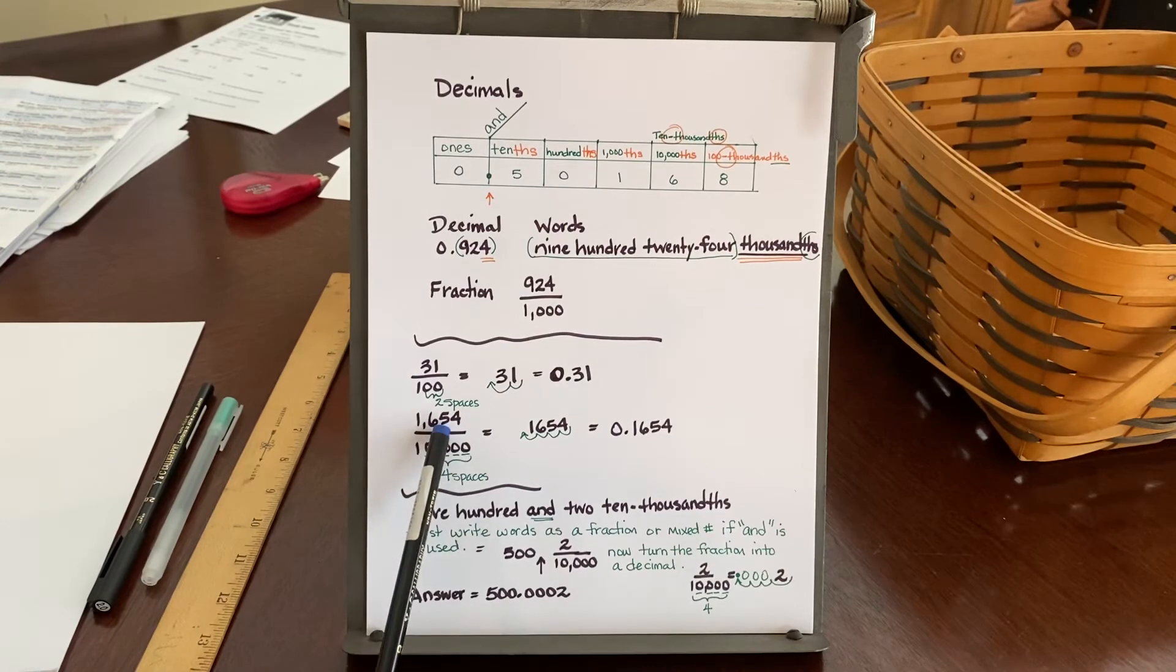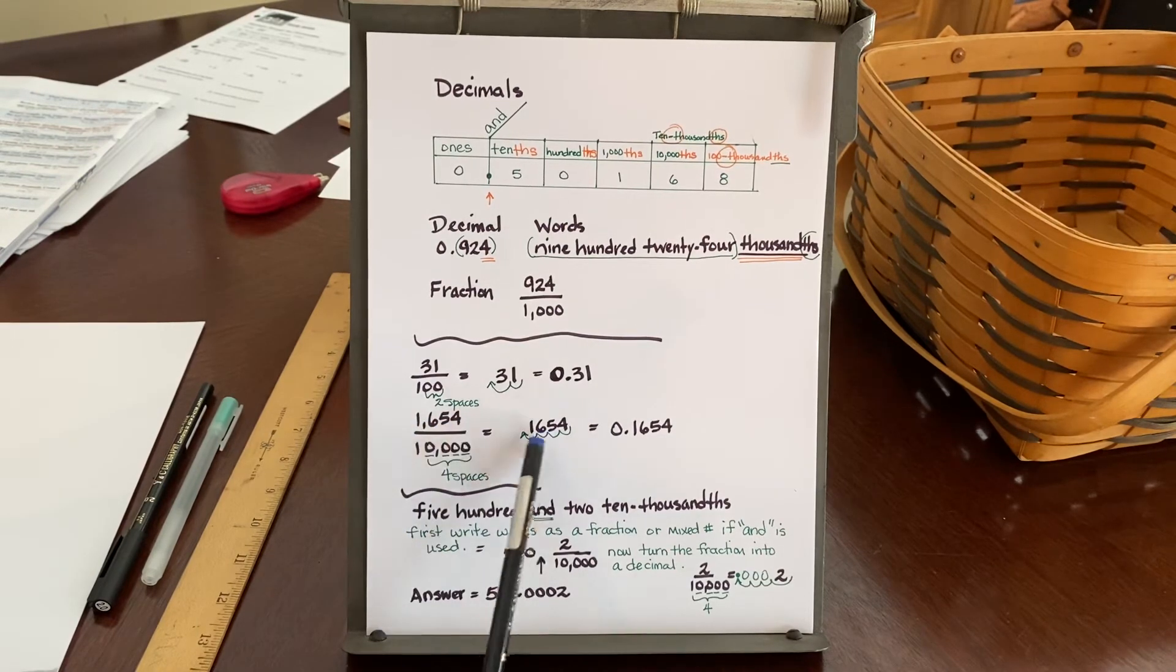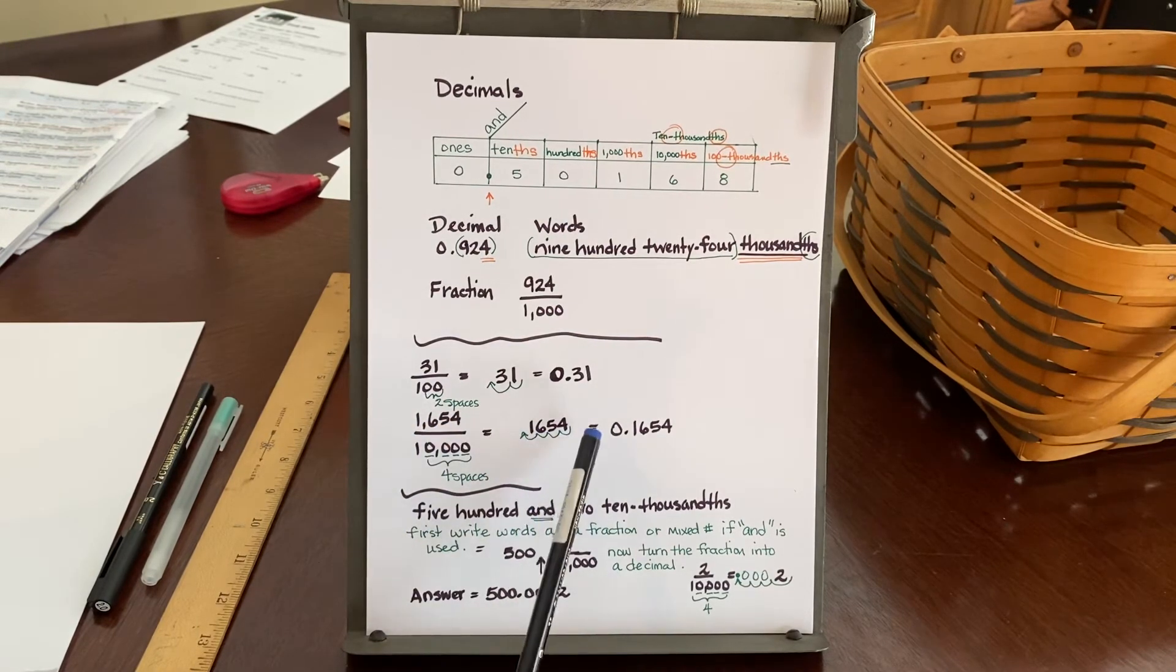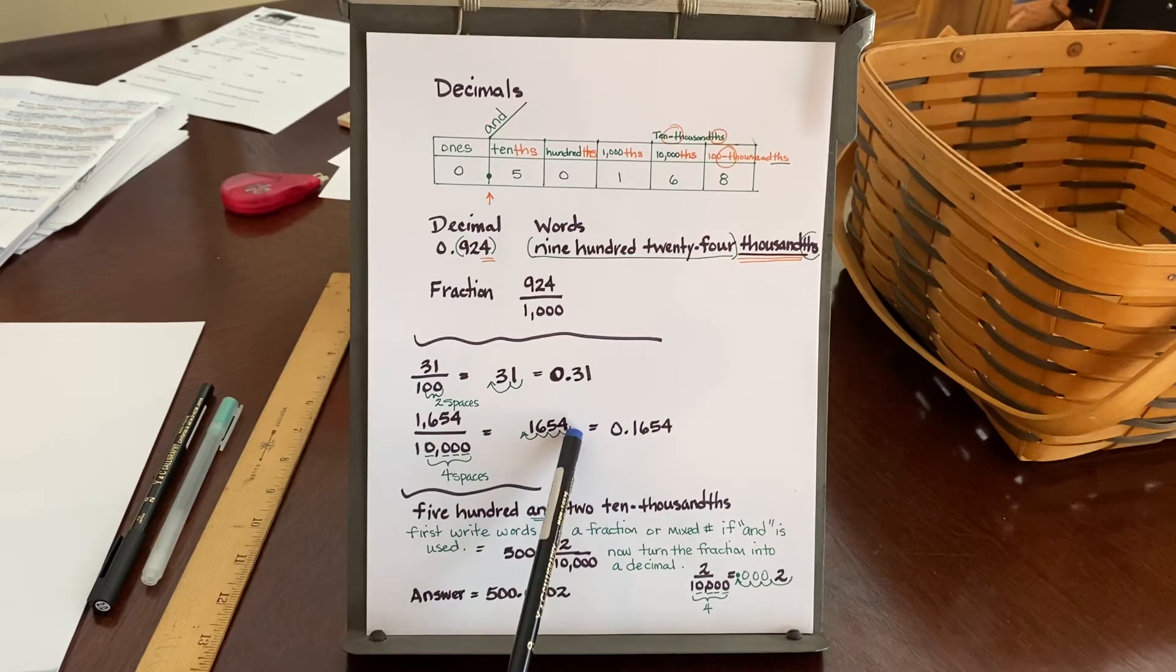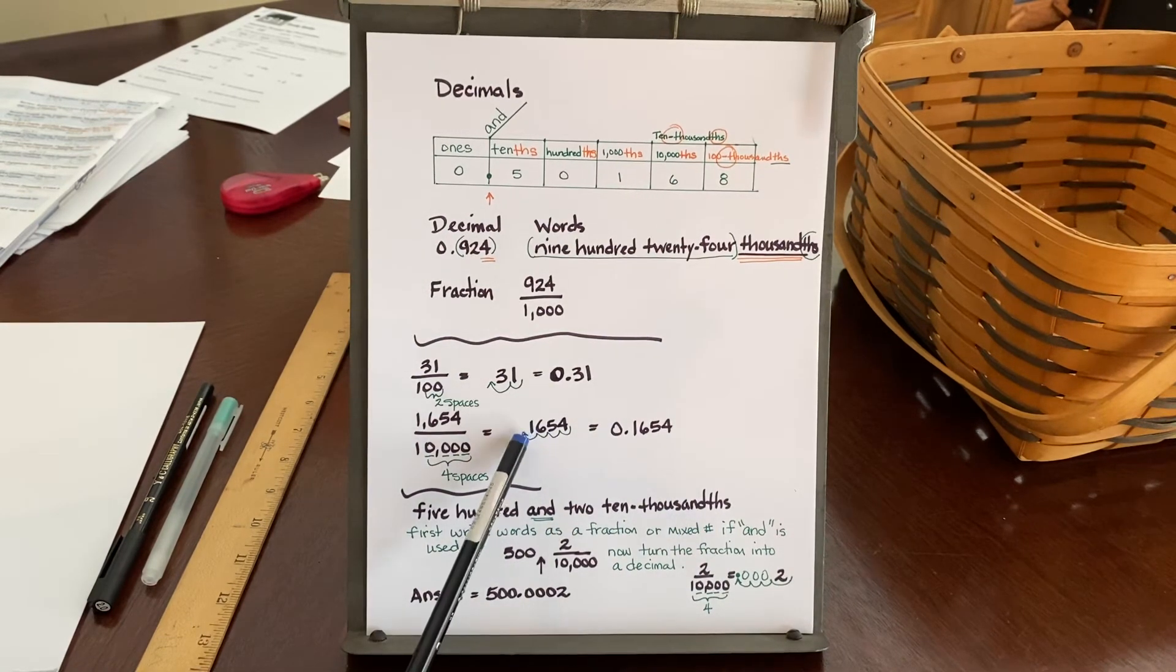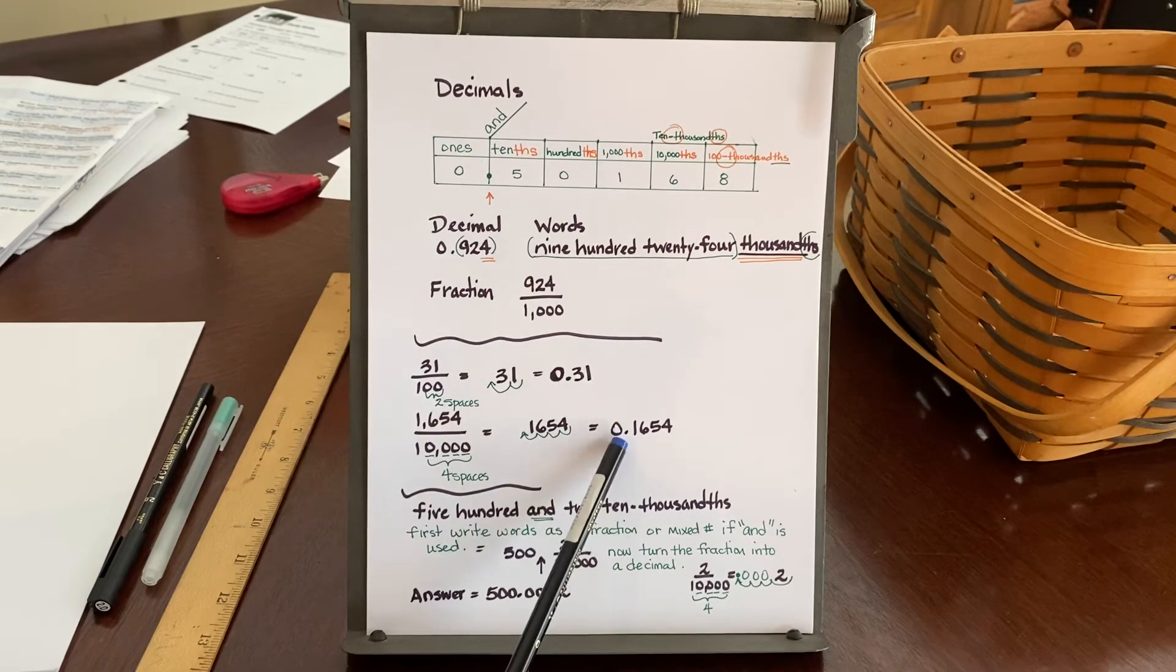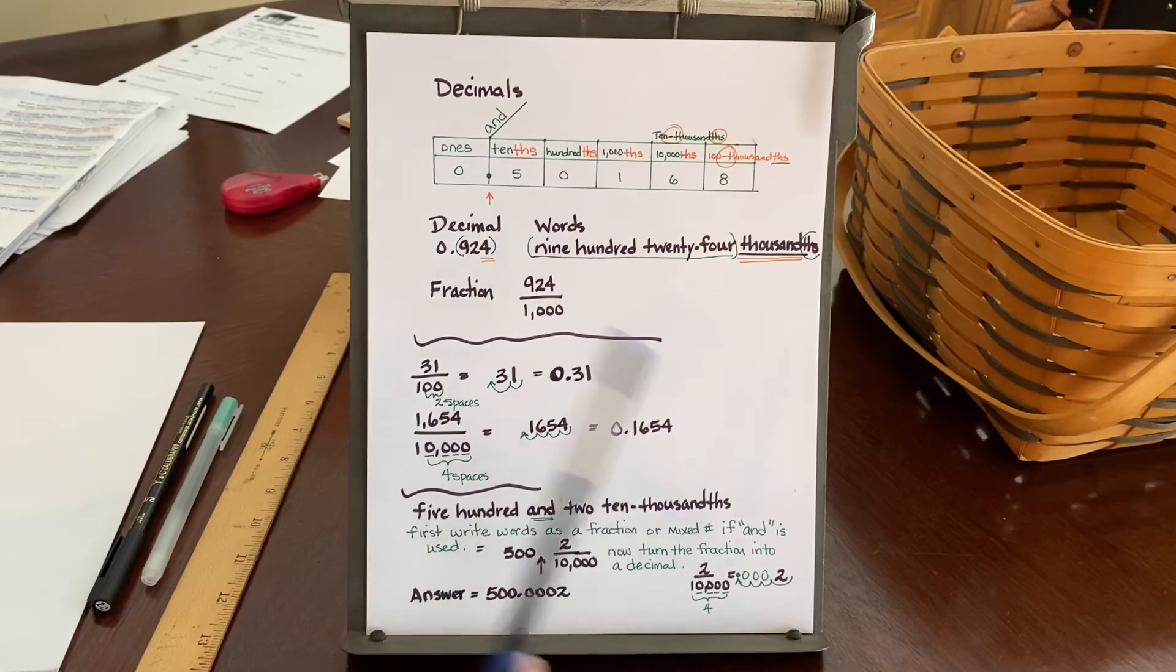So I take my 1654 and I write it down. I go to the back of that number. I'm to the right of the number four. And I start marking off four decimal places moving to the left. So that puts me putting my decimal in front of the number one. So now my official decimal equivalent is 0.1654.